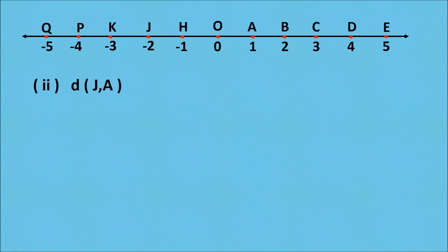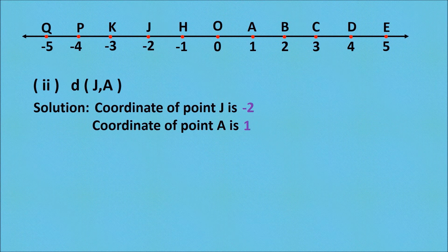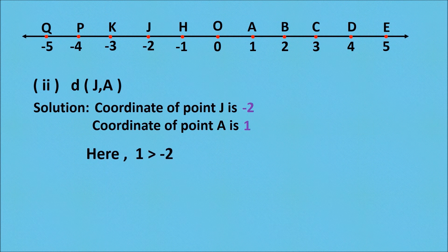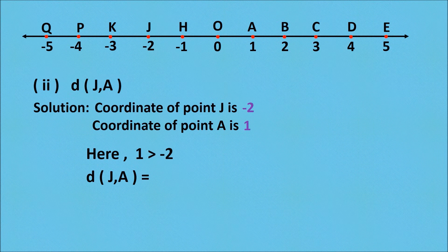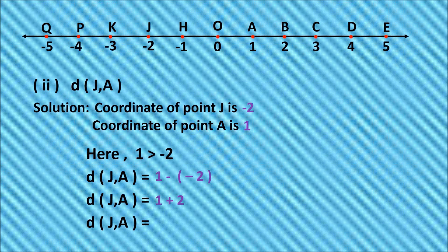Next question: find the distance between point J and A. The coordinate of point J is minus 2 and the coordinate of point A is 1. Since 1 is greater than minus 2, the greater coordinate is 1 and the smaller coordinate is minus 2. Therefore, distance JA equals 1 minus (minus 2), which becomes 1 plus 2. Therefore, distance JA equals 3.